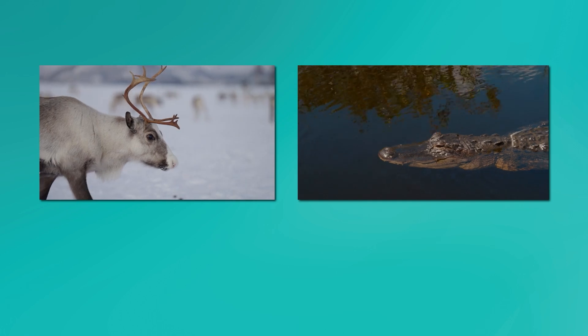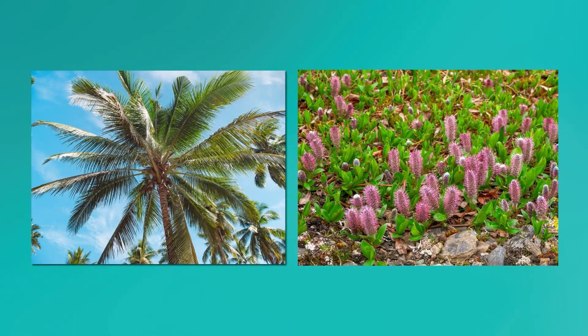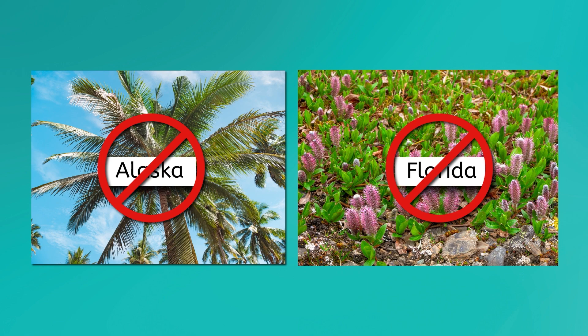We found alligators in Florida and caribou in Alaska. And what about this palm tree, an arctic willow shrub? We definitely wouldn't find a palm tree in Alaska, and we also wouldn't find an arctic willow in Florida.